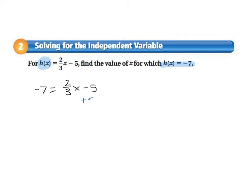Another way of putting this is they would tell us that y is negative 7. So here, we're substituting for our output instead of our input. So I'm going to replace h of x with negative 7, and then solve for x. So here, I'm going to start by adding 5 to both sides.